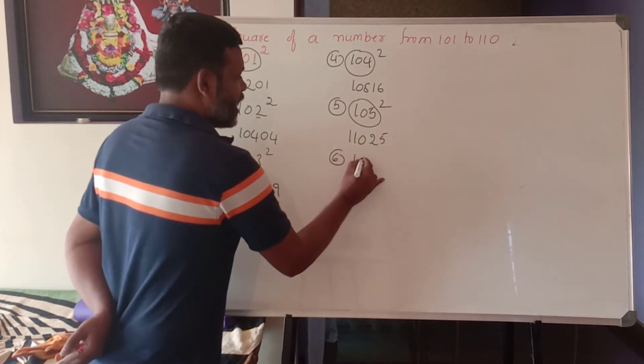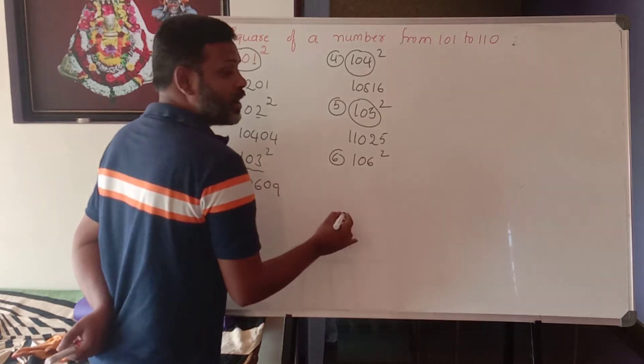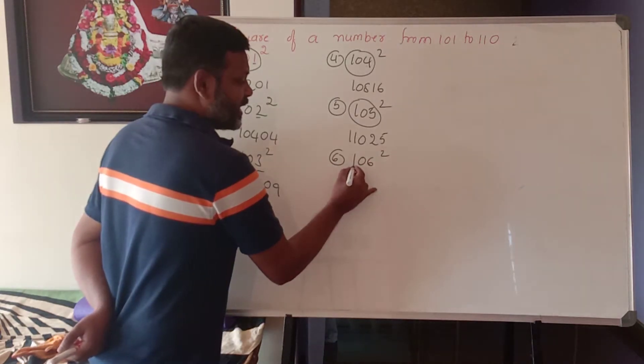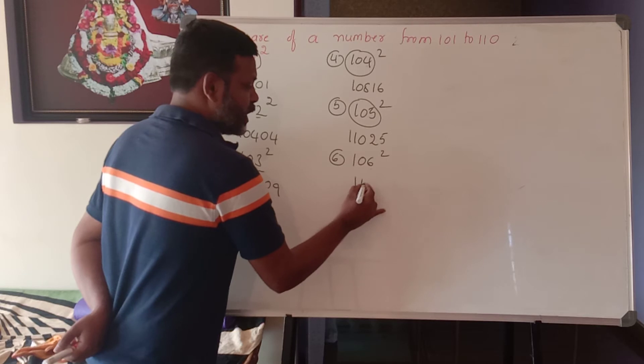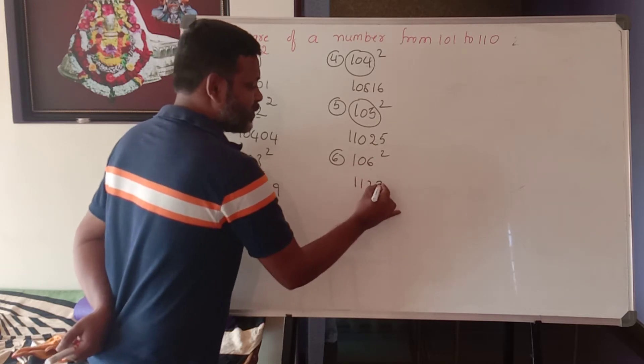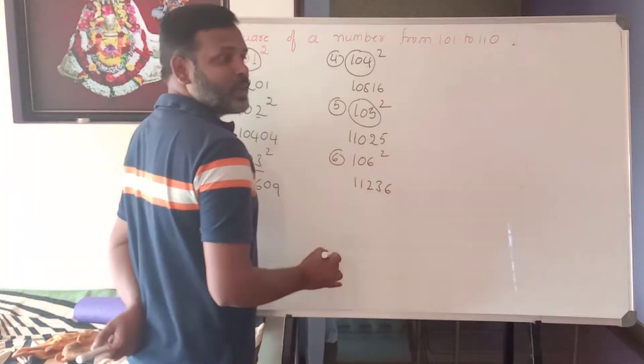Sixth one is 106 square. Now, here we go. 106 plus 6, 112. And 6 square is what? 36.